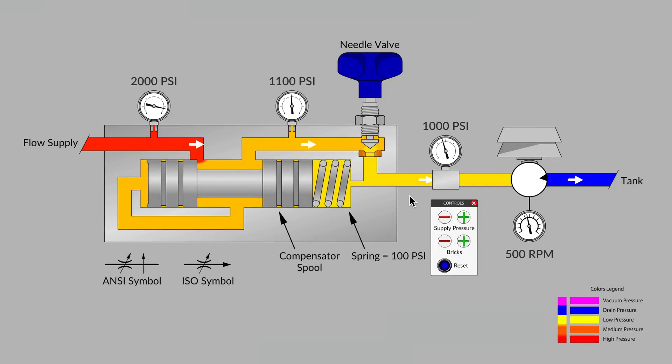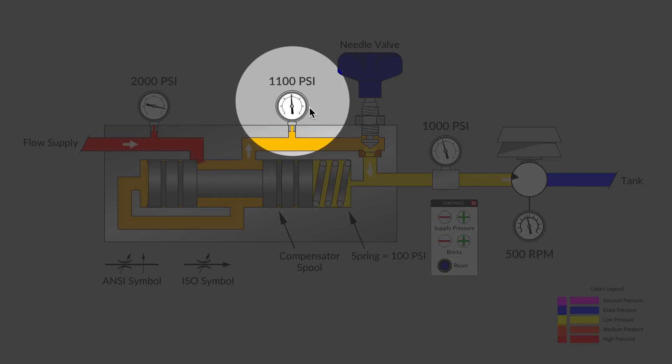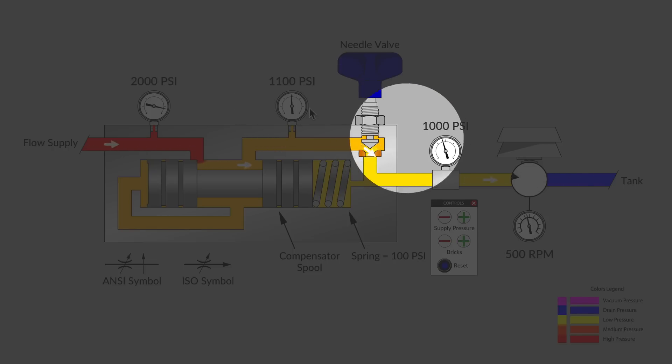But then in part two, we spent a lot of time noticing that the resistance to flow leaving this flow control, which we could change by varying the amounts of bricks on our brake shoe brick stacker. Even when that load pressure changes, we noticed that the value of the pressure just preceding the needle valve was always about 100 psi higher than that load pressure.